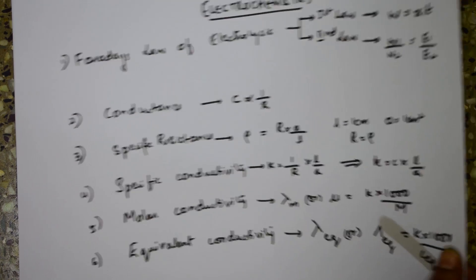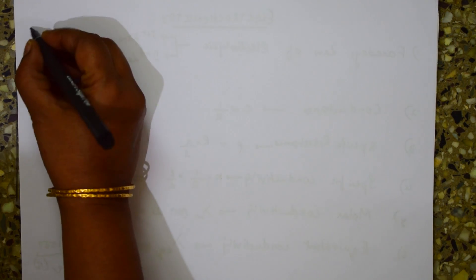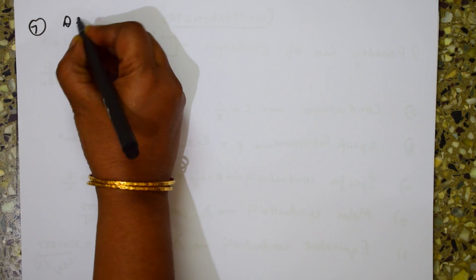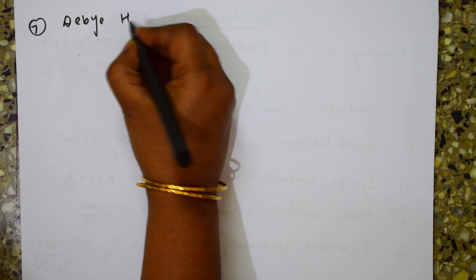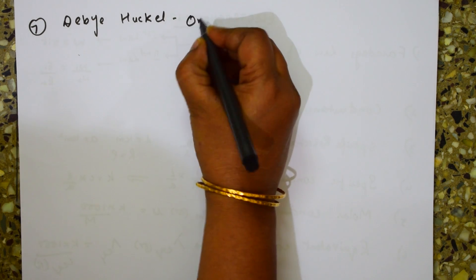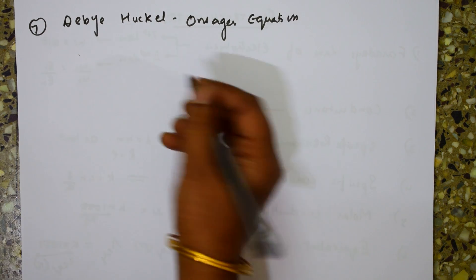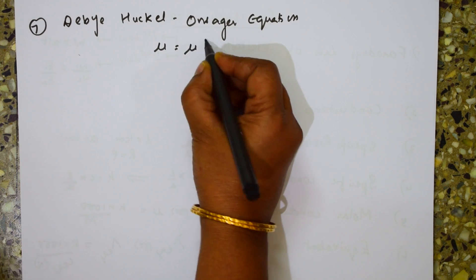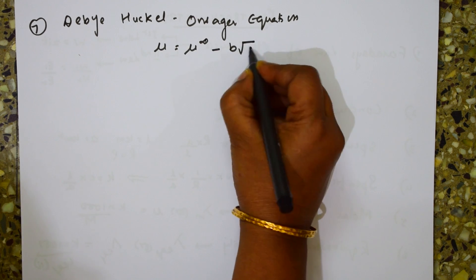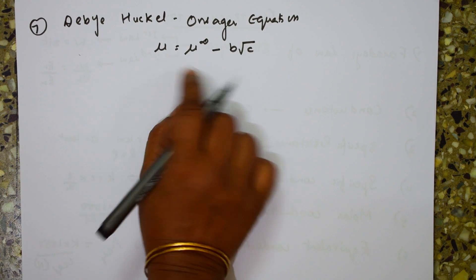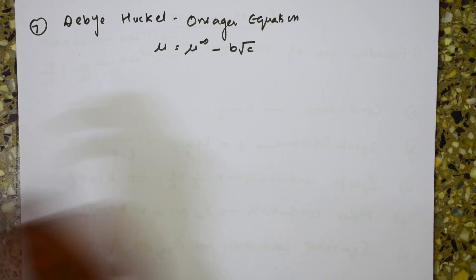The seventh formula to remember is the Debye-Hückel-Onsager equation. The formula is μ = μ_infinity − B√C, where μ is the molar conductance, μ_infinity is the molar conductance at infinite dilution, B is a constant, and C is the concentration.